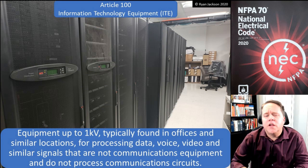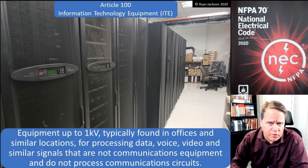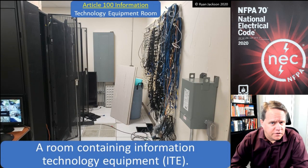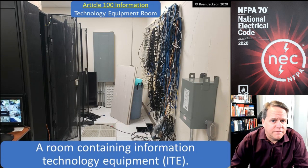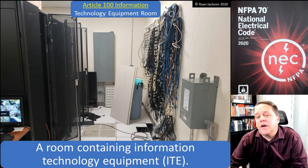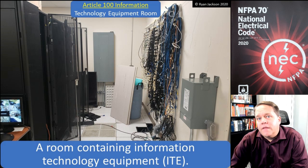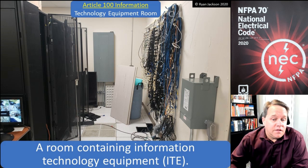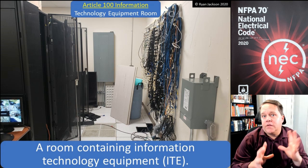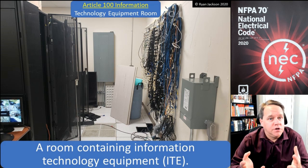IT equipment is basically computer stuff. Why would you need to know this definition? Because you might have to read Article 645 and figure out what an IT room is. An information technology equipment room, also defined in Article 100, is simply a room that contains information technology equipment — put your IT stuff in a room and it becomes an IT room.